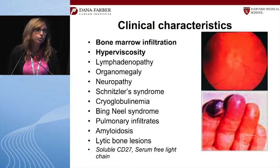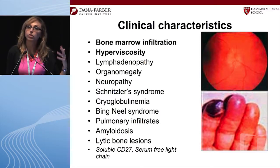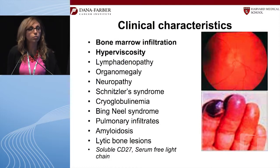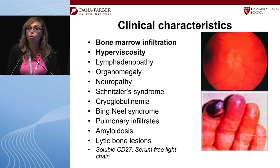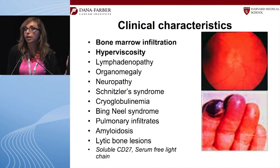Waldenström is a disease, just like multiple myeloma, that progresses very slowly — with early asymptomatic cases of monoclonal gammopathy of undetermined significance IgM MGUS, followed by smoldering Waldenström, and then finally symptomatic disease requiring treatment. Most of the symptoms are related to either high levels of IgM protein — causing hyperviscosity, headaches, blurring of vision, nosebleeds, and retinal hemorrhage — or bone marrow infiltration, characterized by anemia, thrombocytopenia, and leukopenia.